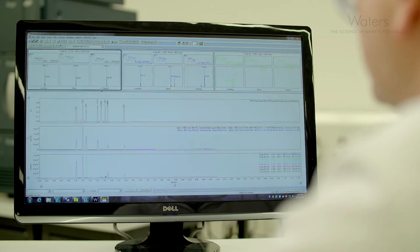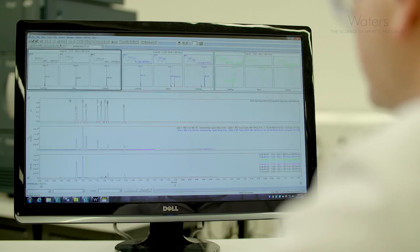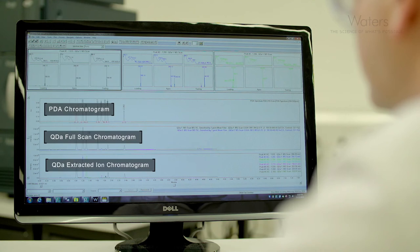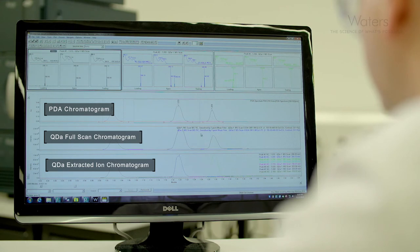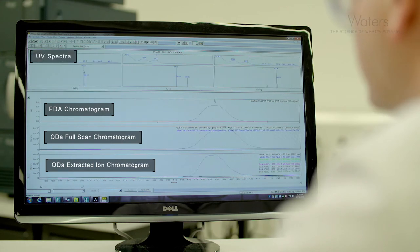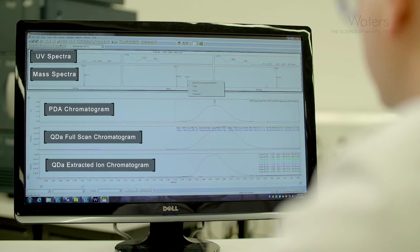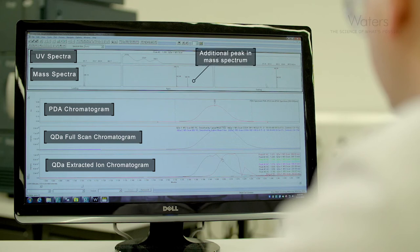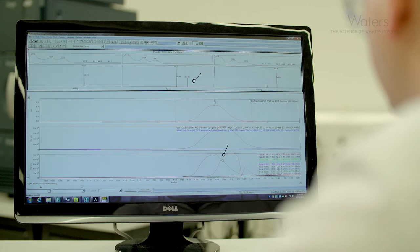with a combination of the Acuity QDA and the Empower software, we can review the data in the mass analysis purity window. And it's here that we combine the UV data with the mass data, and we actually annotate the UV trace with the mass of the analyte. If we look at the mass data, we can now see that there appears to be more than one compound under this peak.